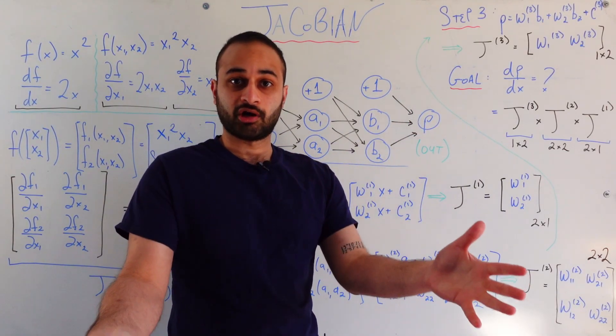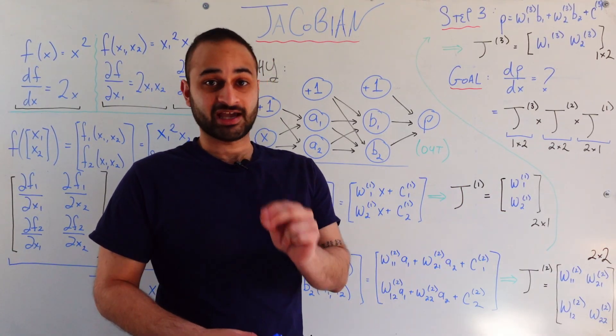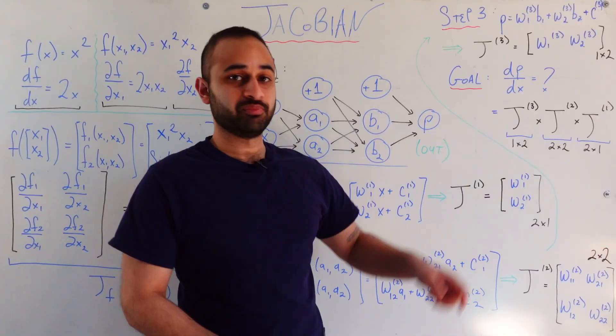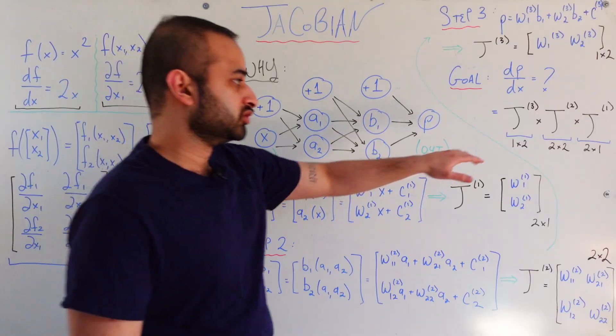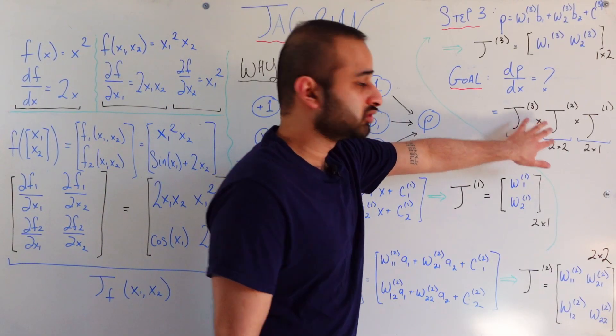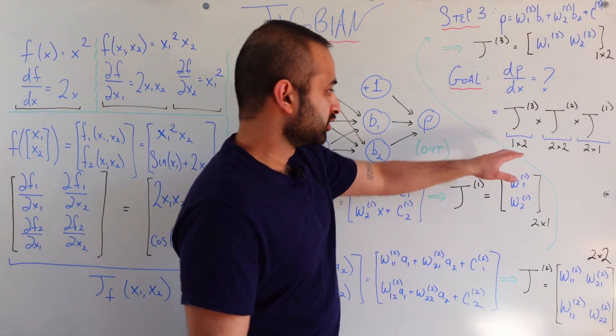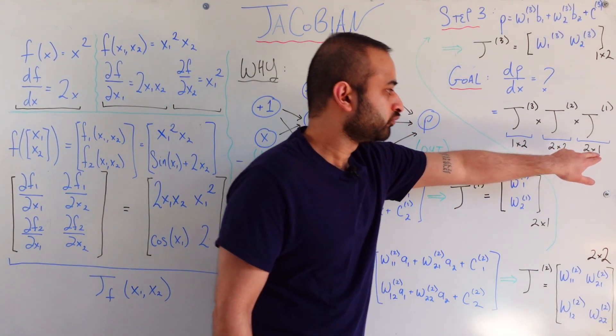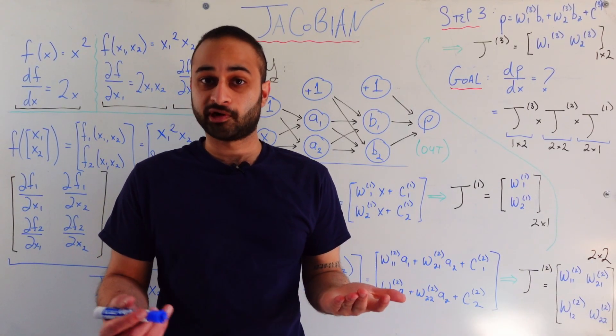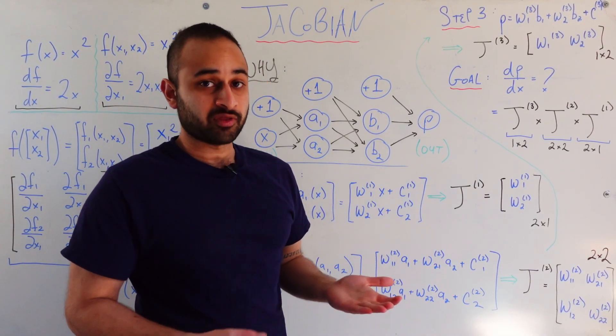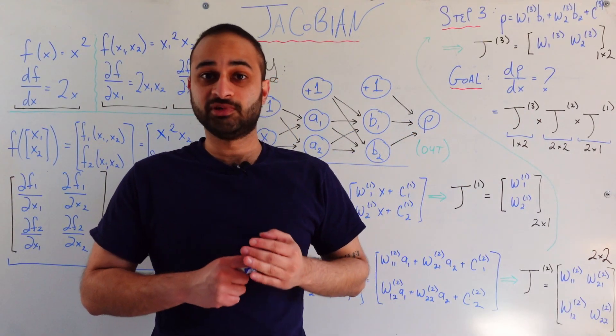Now, here is the magical part, the shortcut. If we choose to use Jacobians, we can get that same exact number, dp dx, simply by just multiplying together the three Jacobians we've collected along the way. So if we do j3 times j2 times j1, let's make sure the dimensionality is correct. So it's a 1 by 2 times a 2 by 2 times a 2 by 1. So the final result is a 1 by 1 scalar, which is exactly what we were expecting. And the awesome thing is that this scalar is exactly the result we're looking for, which is dp dx.